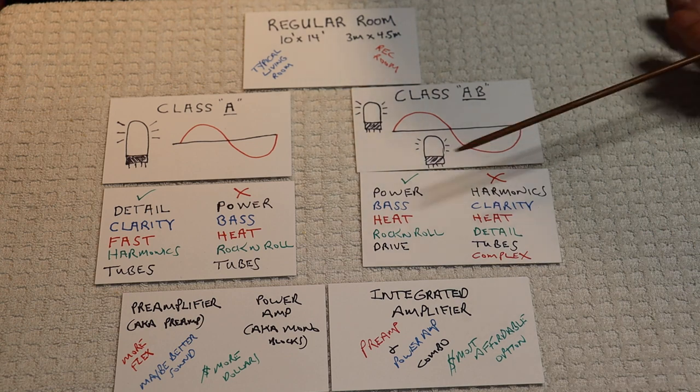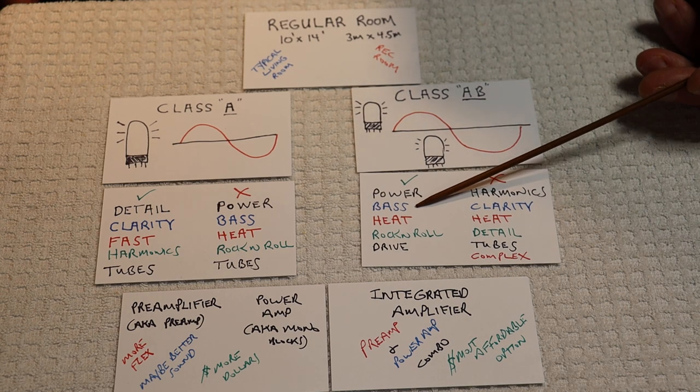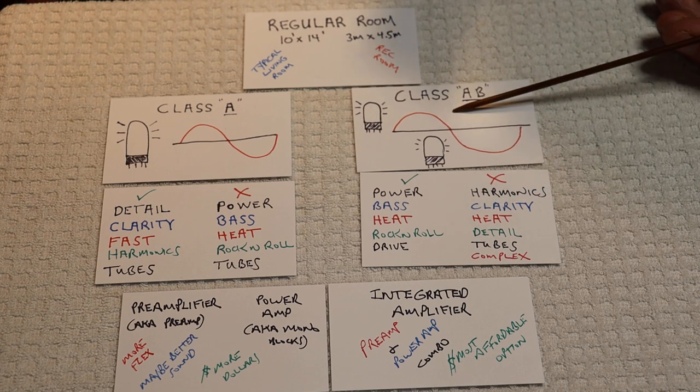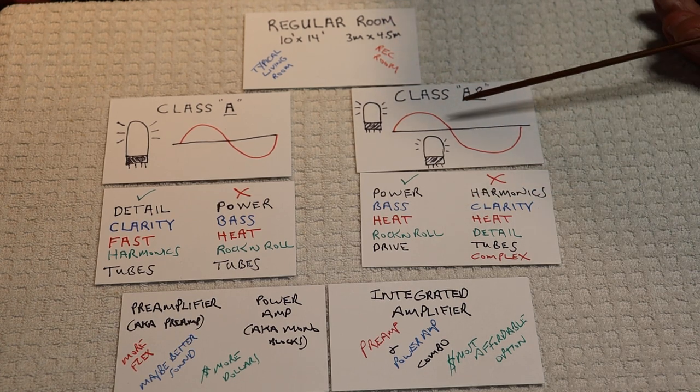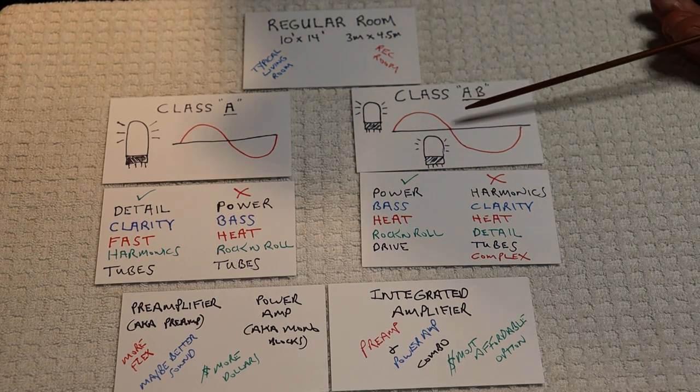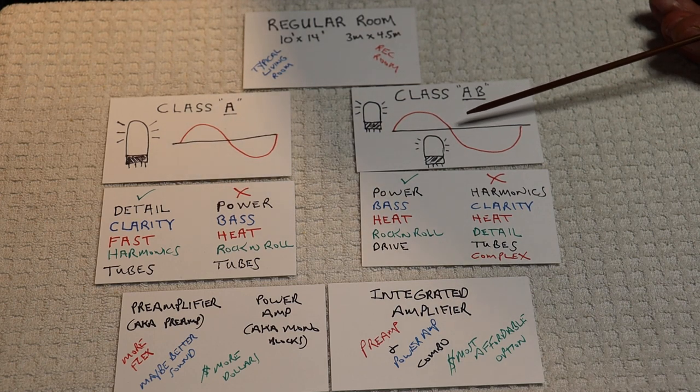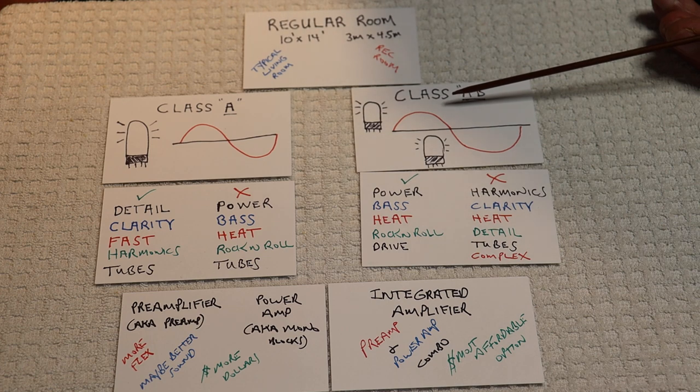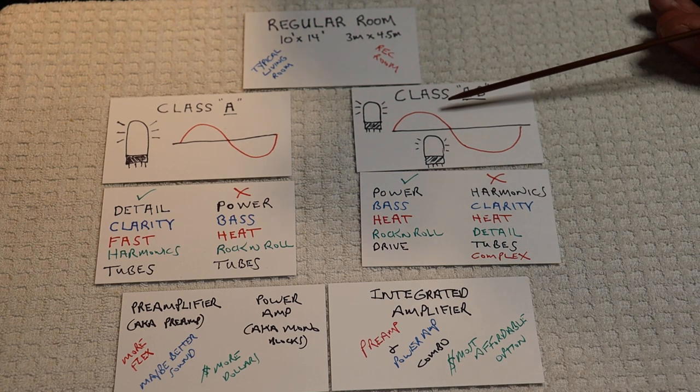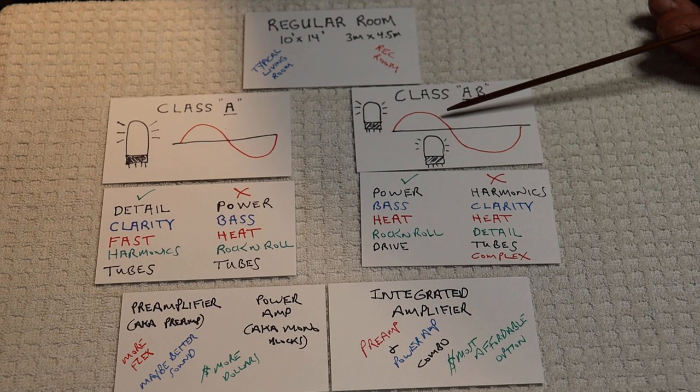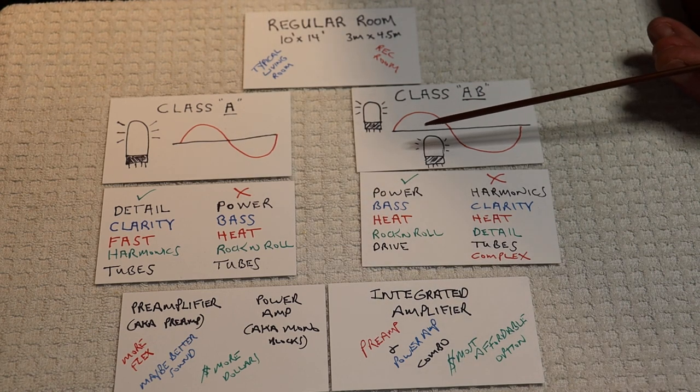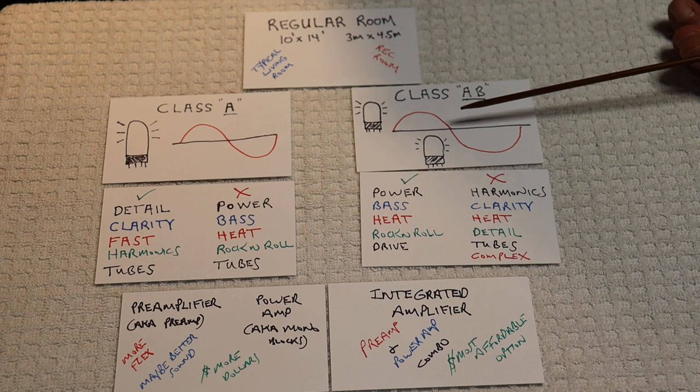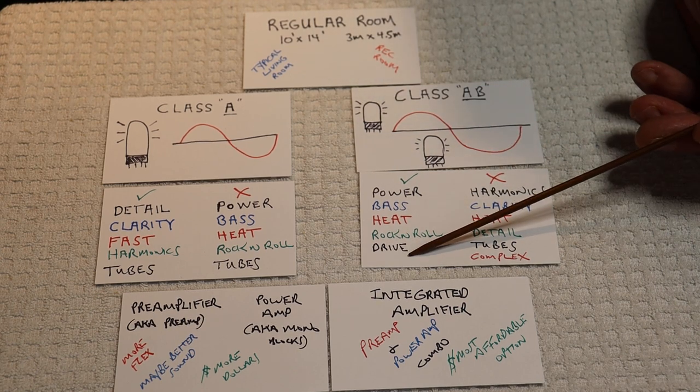Now, over on Class AB, we get power. We get bass. We also get heat because we've got a lot of tubes. Even though the power tubes are running a little bit more than 50% duty cycle, so they're only pumping out the music about half the time. It's really roughly 60% of the time, but let's say half the time. It's really a rock and roll amp, and it's going to have good drive.